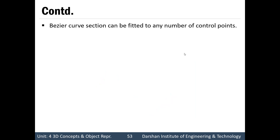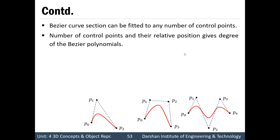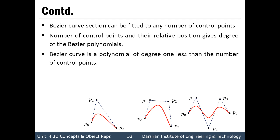A Bezier Curve section can be fitted to any number of control points. We can draw a Bezier Curve with 3 control points, with 4 control points, with 5 control points, and so on. The number of control points and their relative positions give the degree of a Bezier Curve. A Bezier Curve is a polynomial of degree 1 less than the number of control points. For a 3 control point Bezier Curve, the degree will be 2.